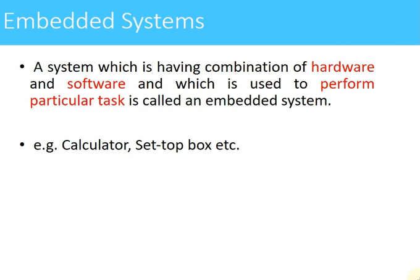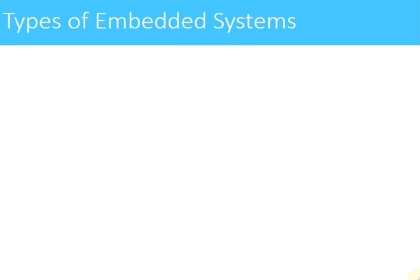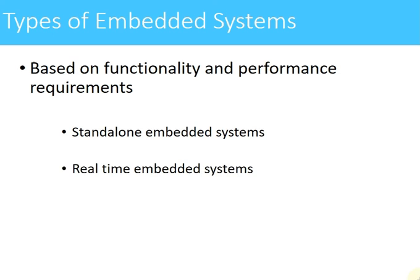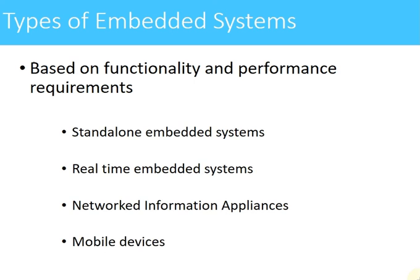The same is the case with the set-top box. Now, embedded systems are classified based on functionality and performance requirements. According to this criteria, we have four different categories of embedded systems: first, standalone embedded systems; second, real-time embedded systems; third, network information appliances; and finally, mobile devices.